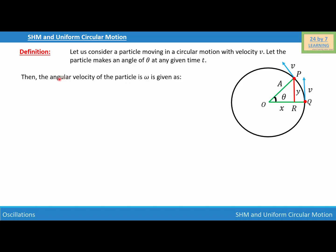Now, as we know that the angular velocity of the particle omega is given as omega is equal to theta over t, then theta will be omega times t and let this is our equation number one.